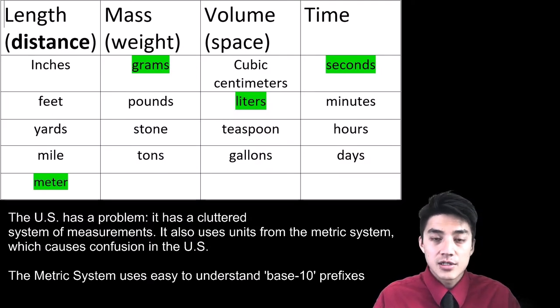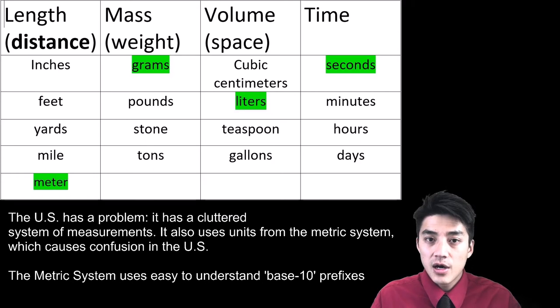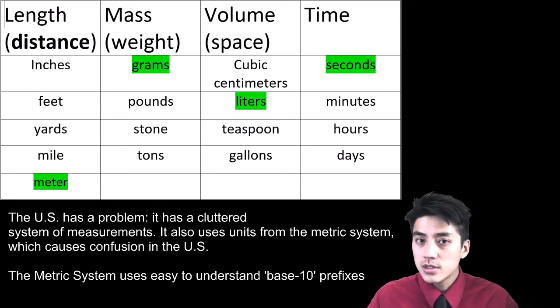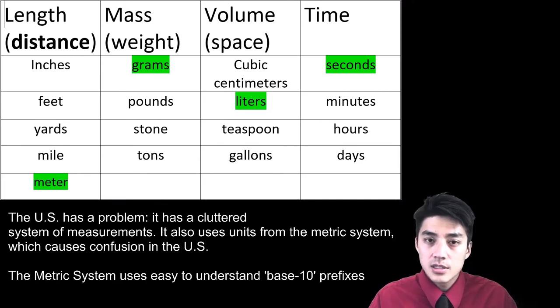The problem in the U.S. is our system of measurements is extremely cluttered. When we want to talk about length, mass, and volume, we'll use a mix of imperial units as well as the metric system. So it causes a lot of confusion for people living in the United States.